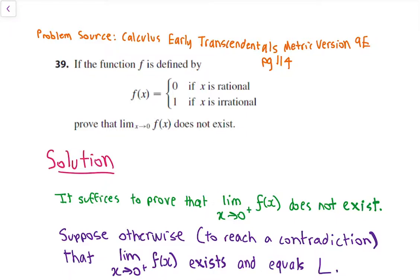In this video we'll be having a look at the following calculus problem. We've got a function f defined by f(x) = 0 if x is a rational number, and 1 if x is an irrational number. So this is a piecewise function. We have to prove that the limit as x approaches 0 of f(x) does not exist.